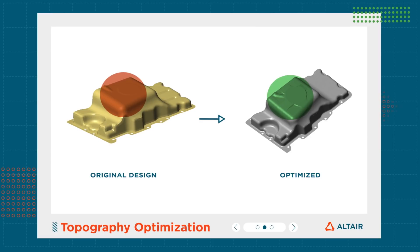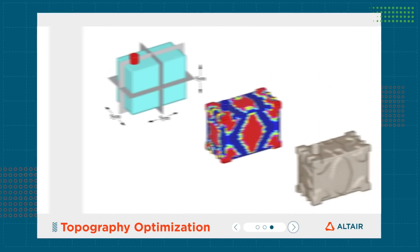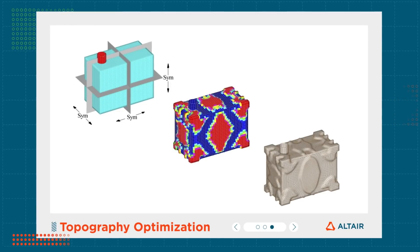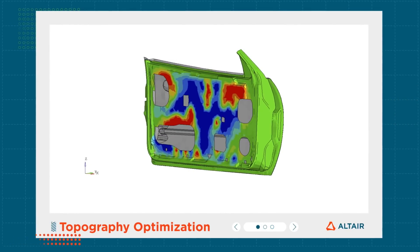Topography Optimization enables designers to define spaces where beads can and cannot be added, the width of the beads, as well as the draw direction, angle, and height.